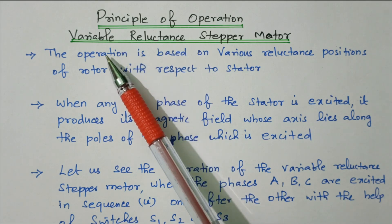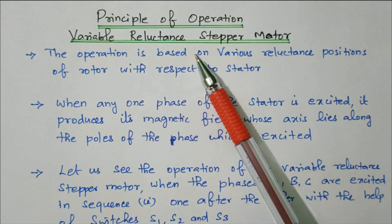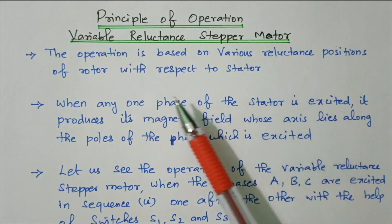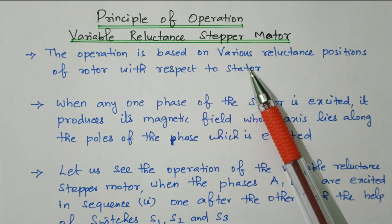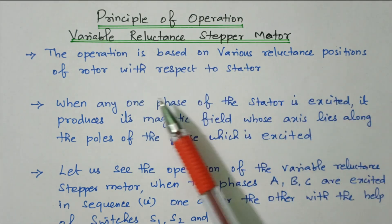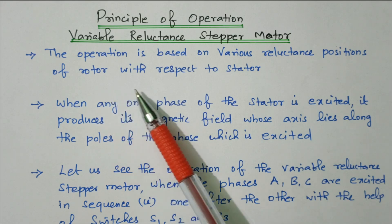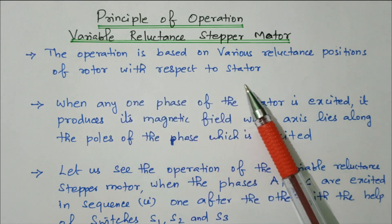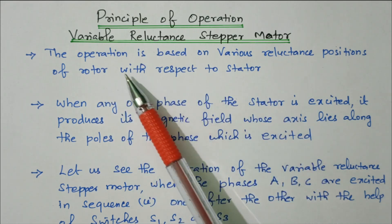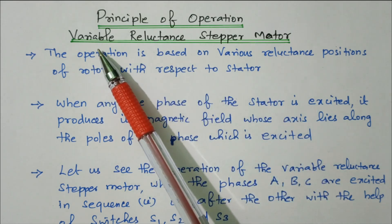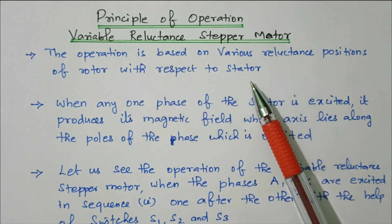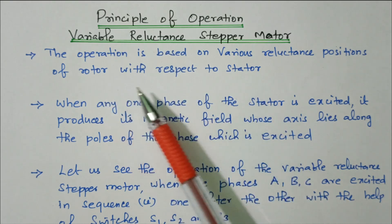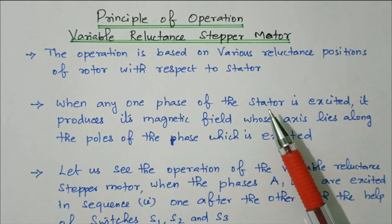Principle of operation: variable reluctance stepper motor. The operation is based on the various reluctance positions of the rotor with respect to the stator. As the name implies, variable reluctance stepper motor, it is based on the reluctance position between the stator and rotor.